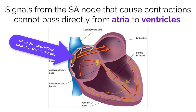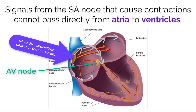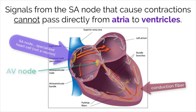Notably, signals from the SA node do not pass directly from the atria to the ventricles, but instead pass across the muscle cells to the atria first, and then the ventricles led by the AV node second. This delay allows time for the atria to contract before the ventricles, allowing for proper blood flow through the chambers of the heart. Conduction fibers line the tissues of the heart to ensure that muscles are contracting at the correct time.